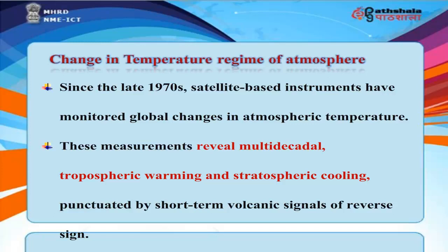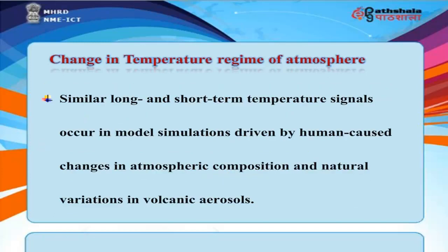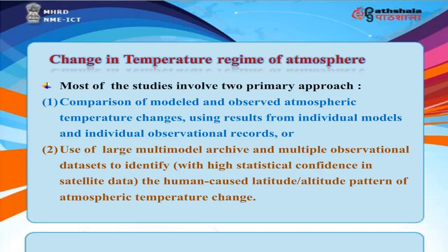Change in Temperature Regime of Atmosphere. Since the late 1970s, satellite-based instruments have monitored global changes in atmospheric temperature, revealing multi-decadal tropospheric warming and stratospheric cooling punctuated by short-term volcanic signals of reverse sign. Similar long and short-term temperature signals occur in model simulations driven by human-caused changes in atmospheric composition and natural variations in volcanic aerosols. Studies use two primary approaches: comparison of modeled and observed atmospheric temperature changes from individual models and observational records, and use of large multi-model archives to identify with high statistical confidence the human-caused latitude-altitude pattern of atmospheric temperature change.